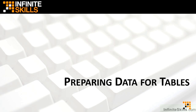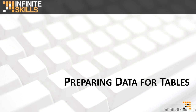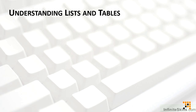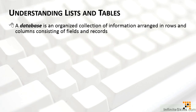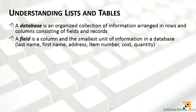In order to determine what needs to be done, it helps to understand a little bit of the terminology and criteria for tables. First, let's go through some basic terminology regarding lists and tables in Excel. Another term you'll often hear is a database — a generic term for an organized collection of information arranged in rows and columns, consisting of fields and records.